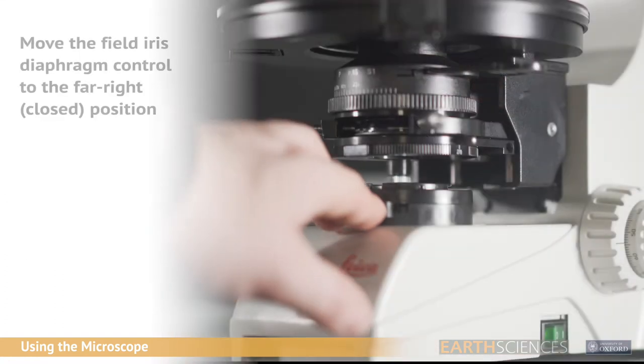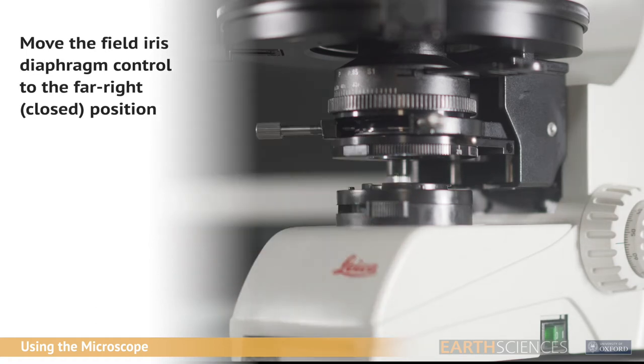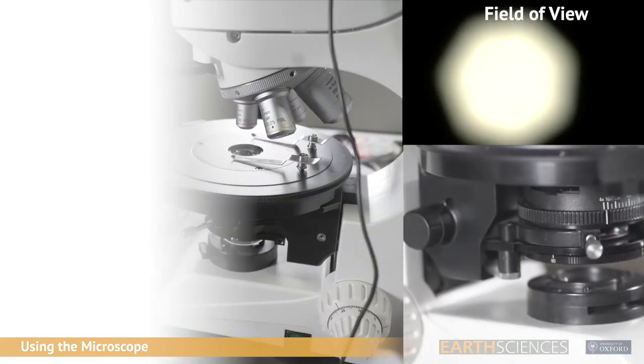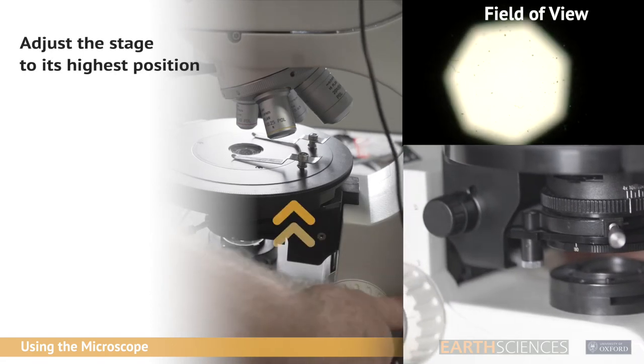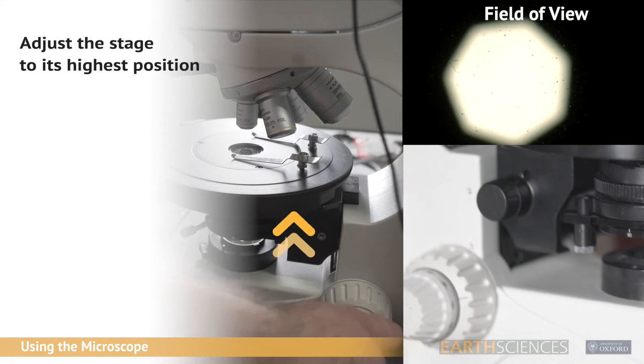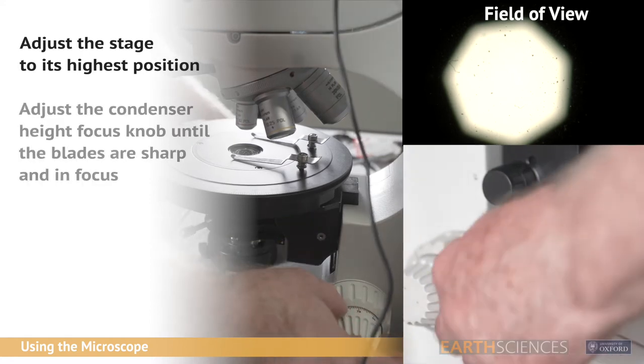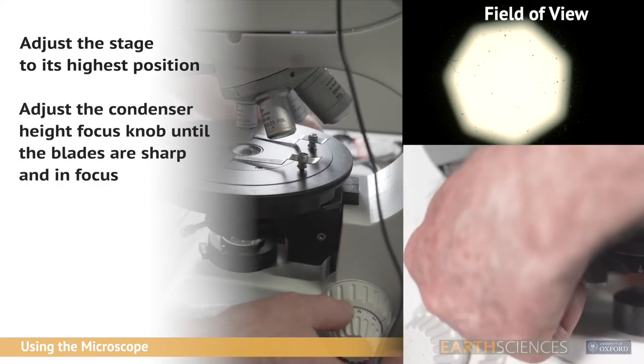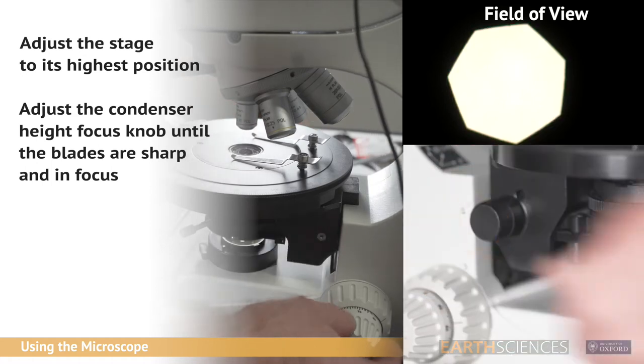Move the field iris diaphragm control across to the far right position. Use the coarse focus adjustment to adjust the stage height as high as possible. Adjust the condenser height focus knob until the aperture diaphragm blades are sharp and in focus.